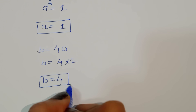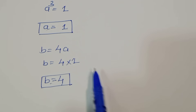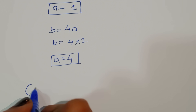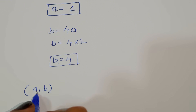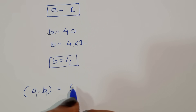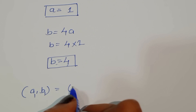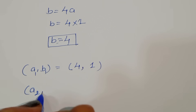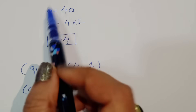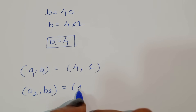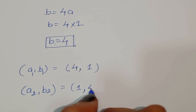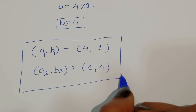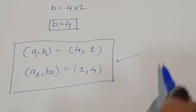So we got the values: when a₁ = 4, b₁ = 1 and when a₂ = 1, b₂ = 4. The solution is a = 4, b = 1 or vice versa, a = 1, b = 4. Thank you.